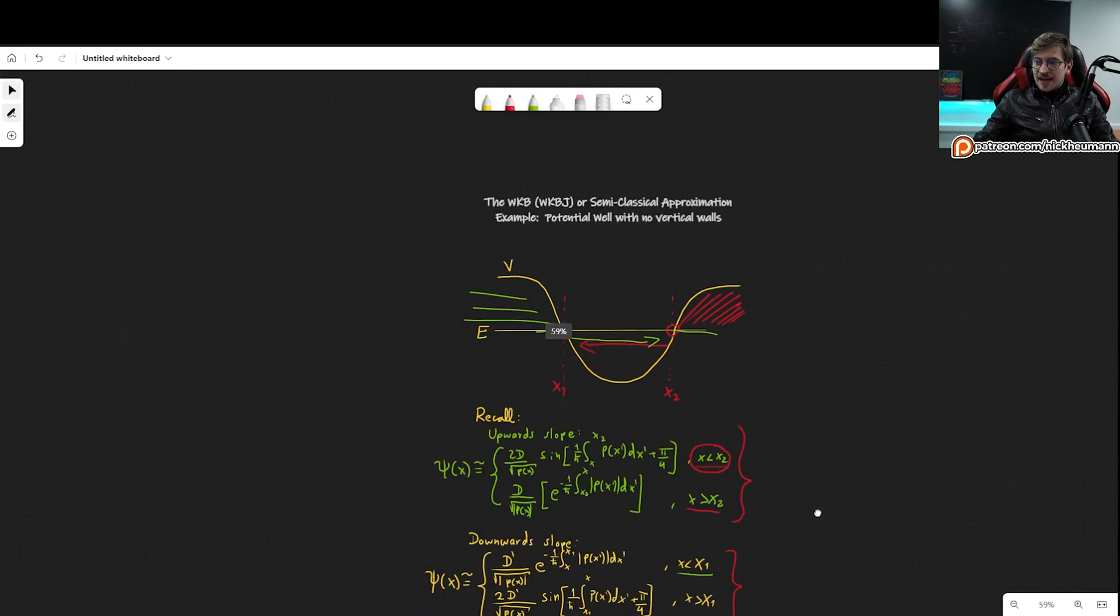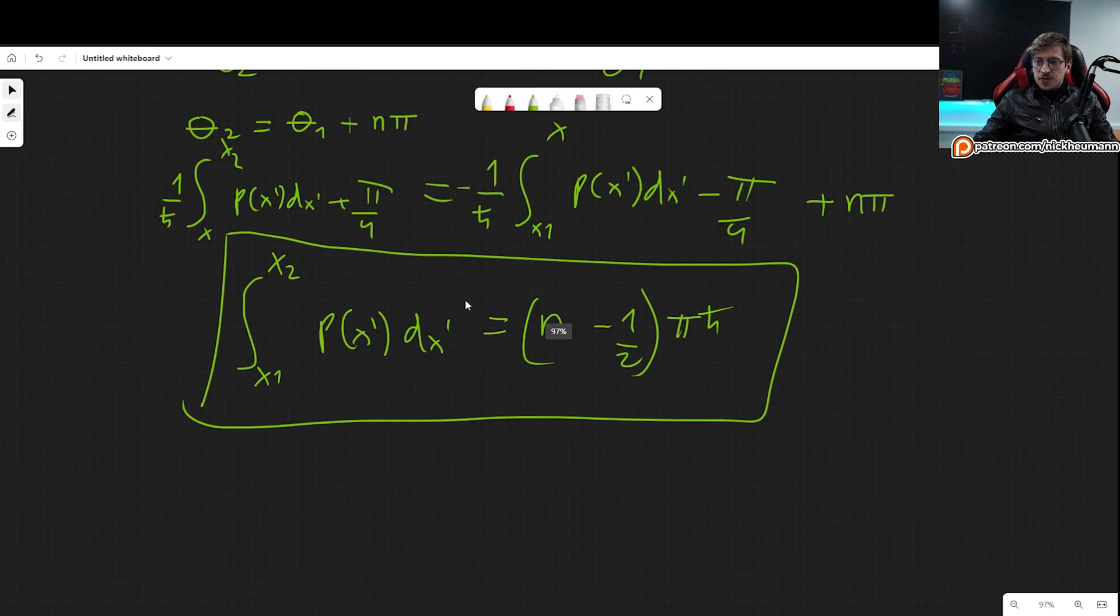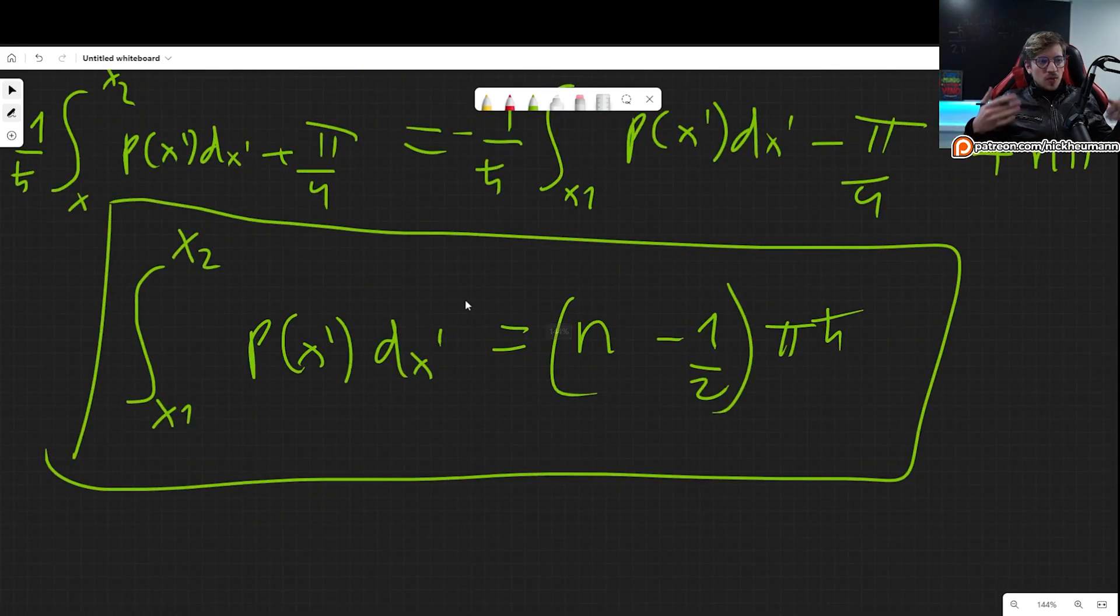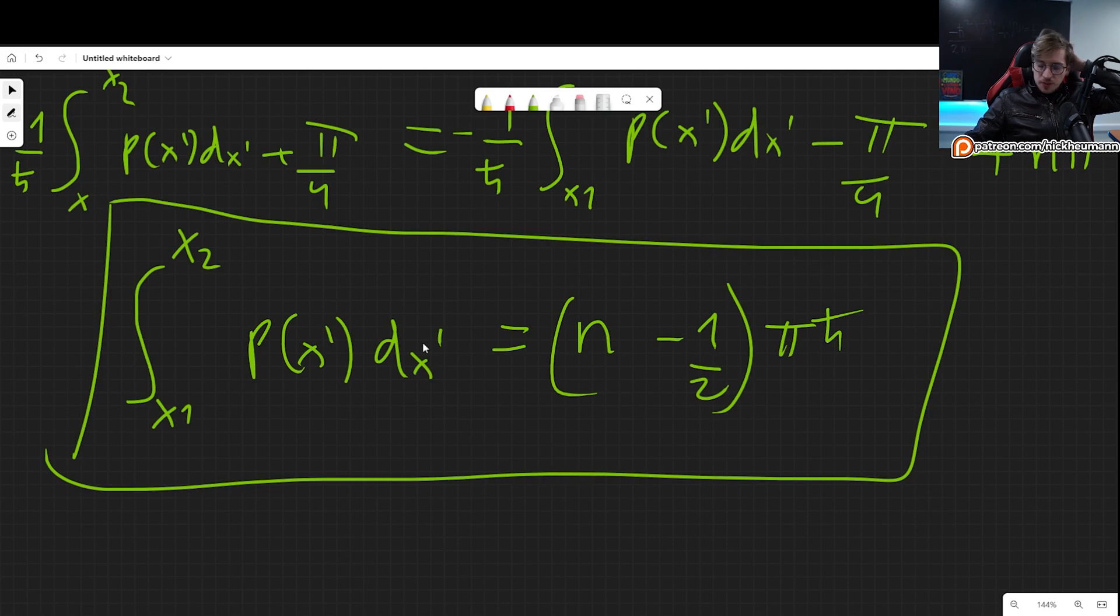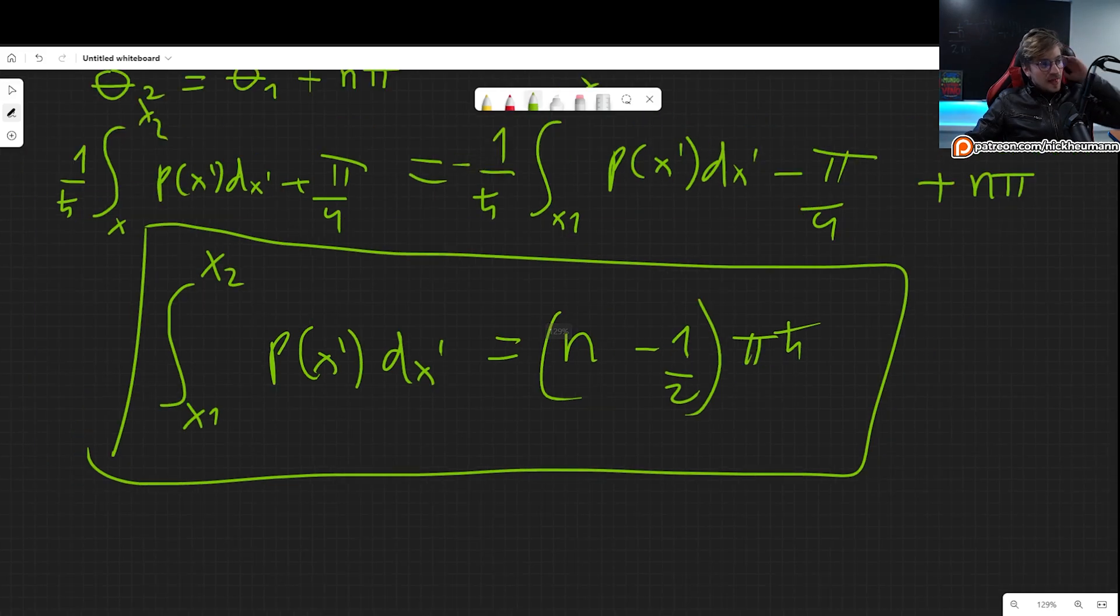This is the condition, and as you can see this works for any potential that is of this kind and it's going to be very very useful. Another equation or formula to put into your repertoire for the WKB approximation. I hope that this was useful to you. If it was, please make sure to leave a like on the video, comment and subscribe, and maybe consider checking out my Patreon. I'll see you in the next video. Thank you very much for watching.